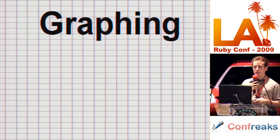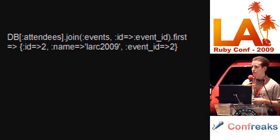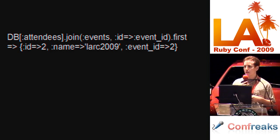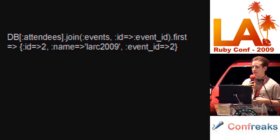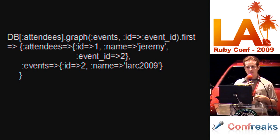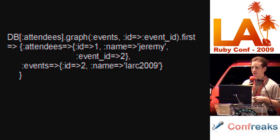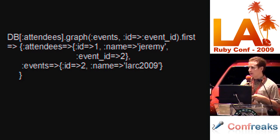Sequel has a possibly unique feature called dataset graphing. To explain the benefits, I first need to explain the problem it solves: join-clobbering. Since Sequel returns rows as hashes, if multiple tables have the same column names and you don't alias the columns manually, columns in the joined tables end up clobbering columns in the original table. For example, both attendees and events have ID and name columns — when you join them, columns from the events table end up clobbering columns from the attendees table. Graphing fixes this by returning rows as a hash with table names as keys and subhash values, where the subhashes have column keys and column values. It does this by aliasing all columns for you and splitting the single hash result into subhashes when rows are retrieved. Graphing makes it much easier to deal with database relationships at a row-based level.